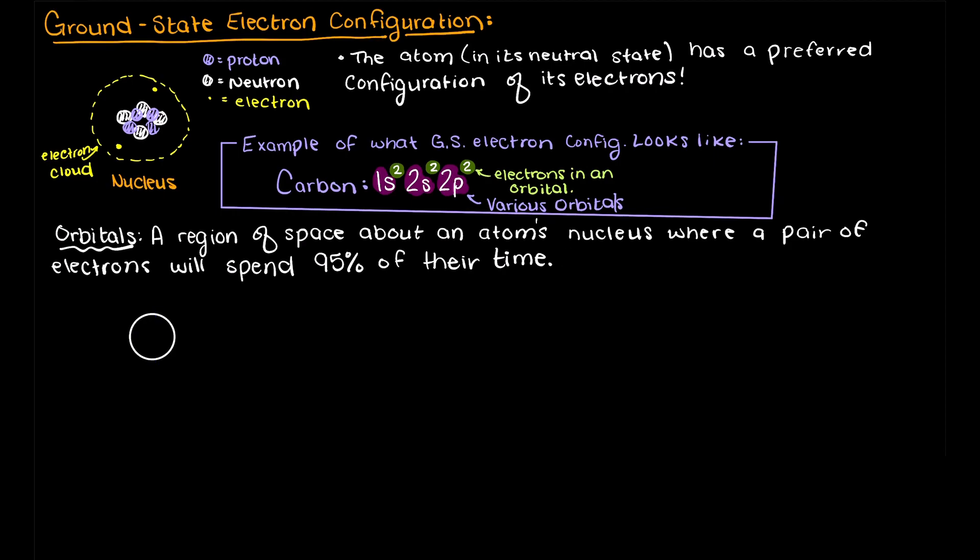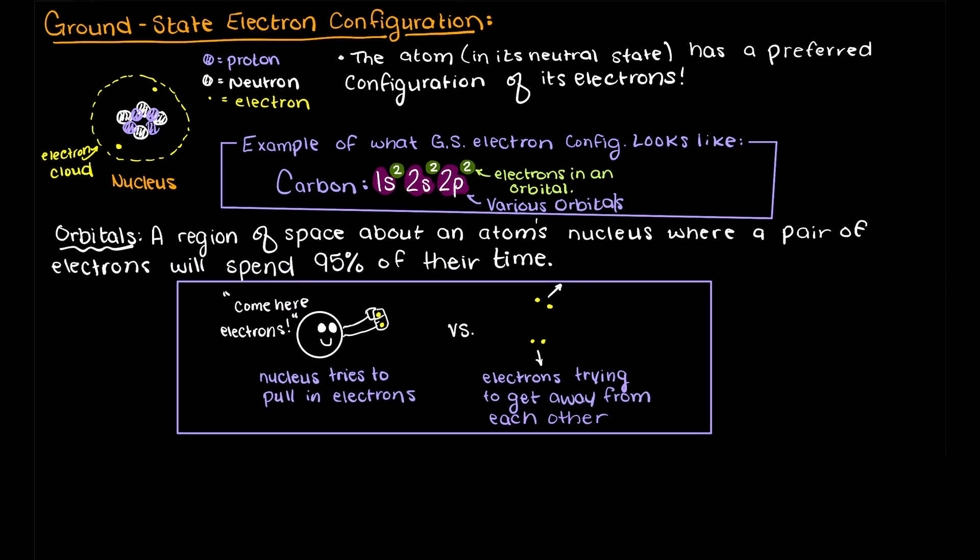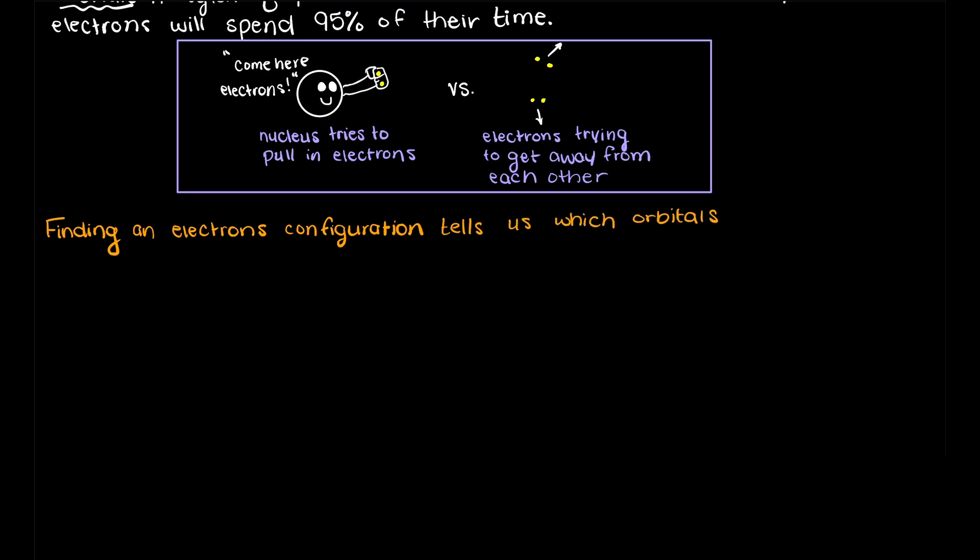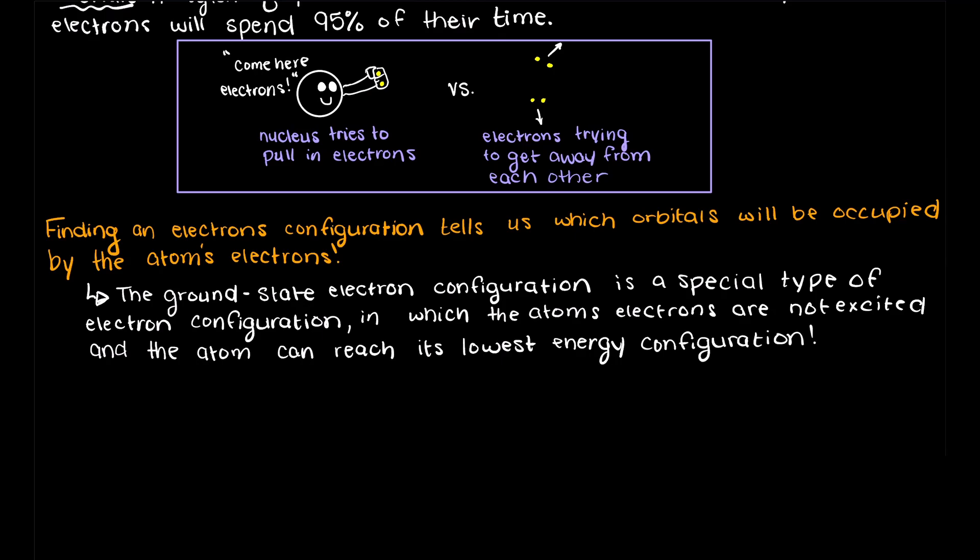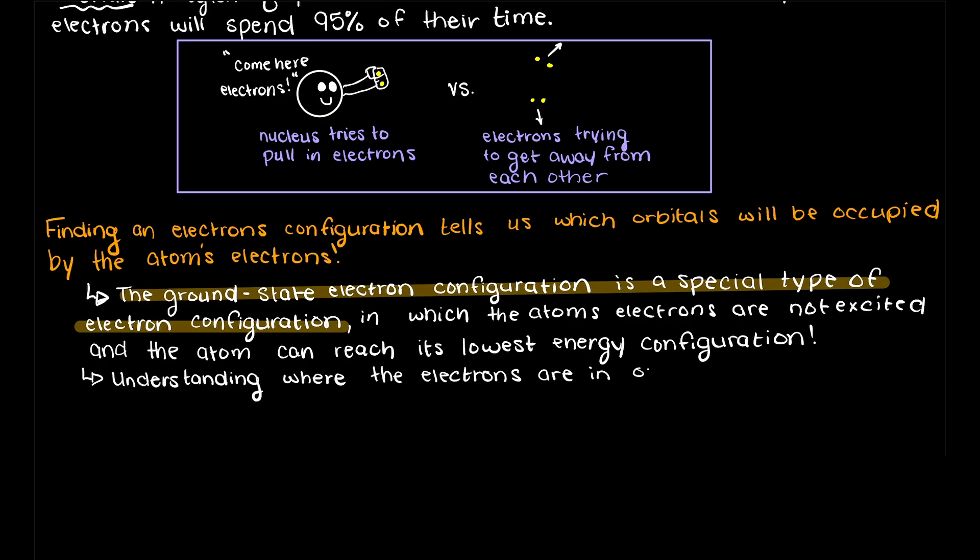Remember that all orbitals about an atom are regions where two paired electrons spend 95% of their time, and these orbitals take many different shapes. The reason they have different shapes is because we have a balance between the protons in the nucleus pulling the electrons in and the electrons repelling each other. The ground state electron configuration just tells us which orbitals are going to be present in a given atom. The ground state electron configuration is telling us the lowest possible energy configuration for an atom, and this is why it is called the ground state. It is the lowest level of energy that we can have. This configuration is ideal for the atom as it is the easiest electron configuration to maintain.